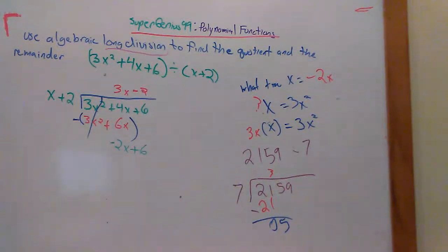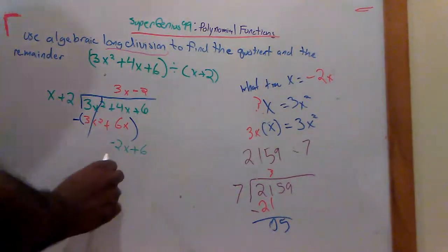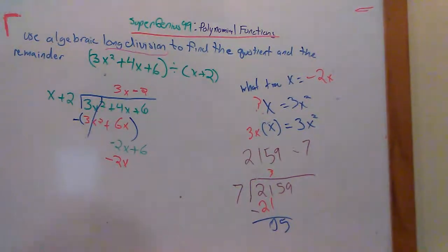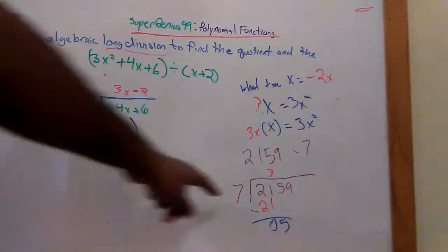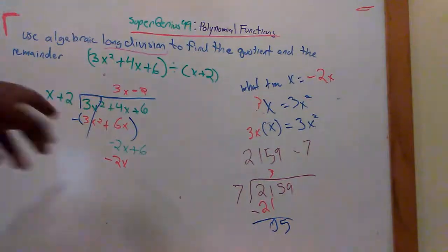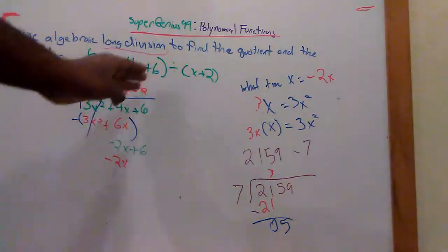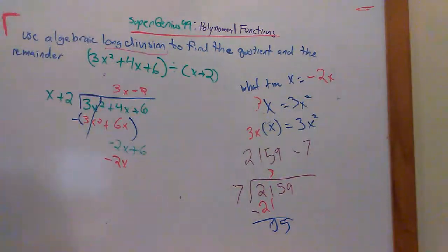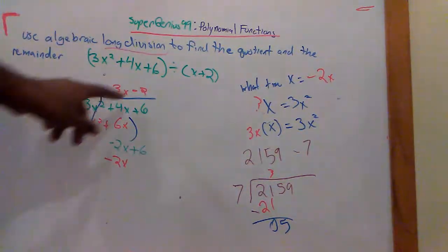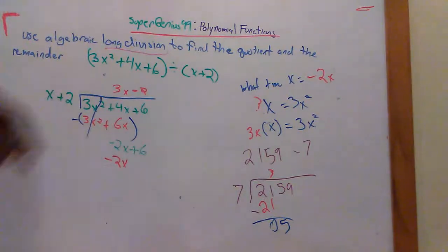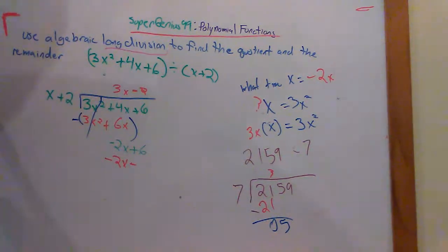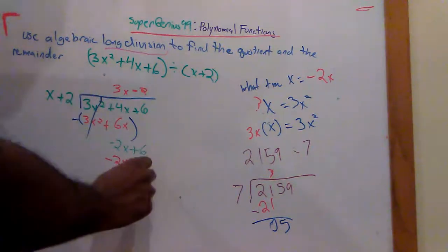Why do I choose negative 2? Because negative 2 times x is negative 2x. Now, why do I need these two to be identical? It didn't have to be identical, but in this case, you want it to be identical so that it goes away with subtraction. So I multiply negative 2 times x. I got negative 2x. And negative 2 times 2 is negative 4.